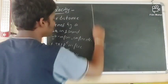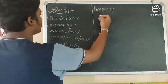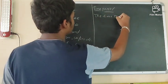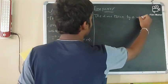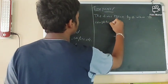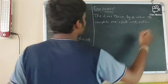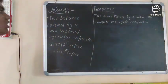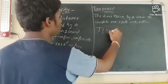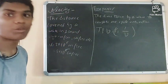Let us discuss time period. The time taken by a wave to complete one cycle is called time period. It is denoted by T, and the relation is T = 1/ν (T equals 1 divided by frequency).